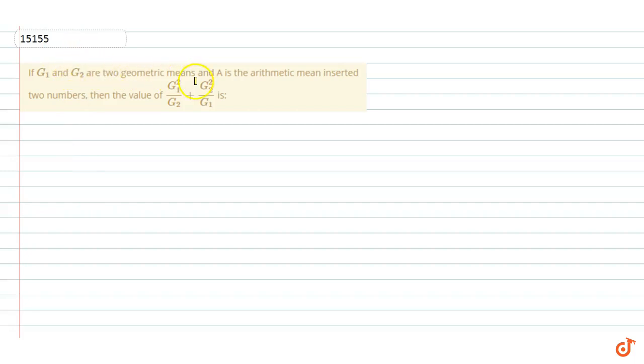If g1 and g2 are two geometric means and A is the arithmetic mean inserted between two numbers, then the value of g1 square by g2 plus g2 square by g1 is what? Let's say we have two numbers.